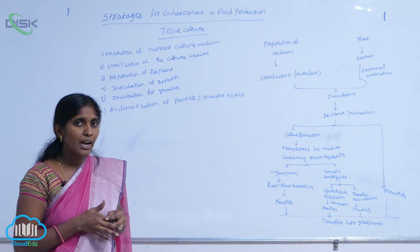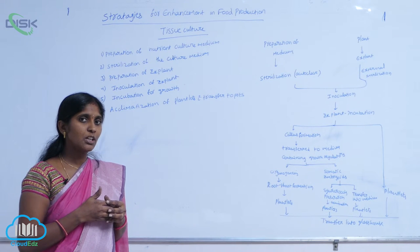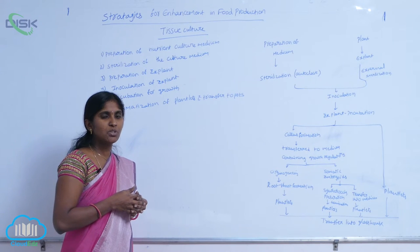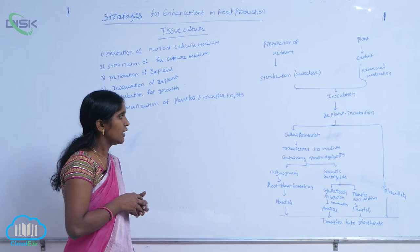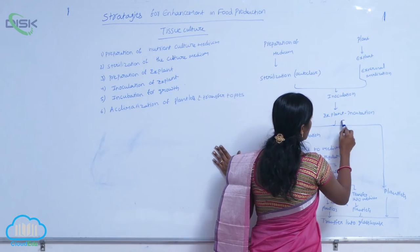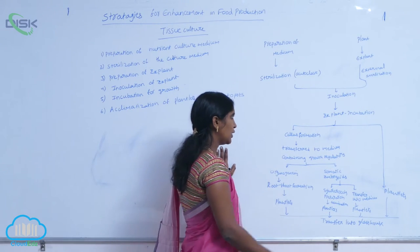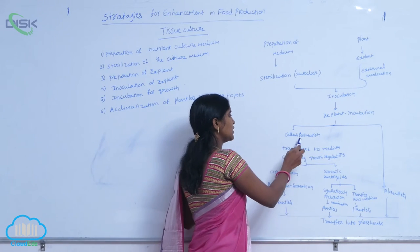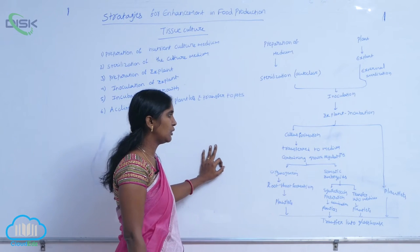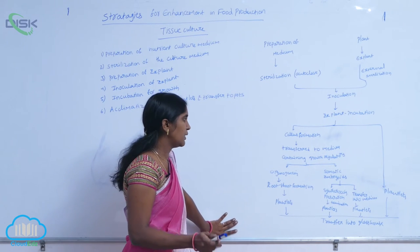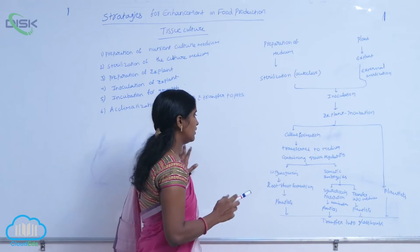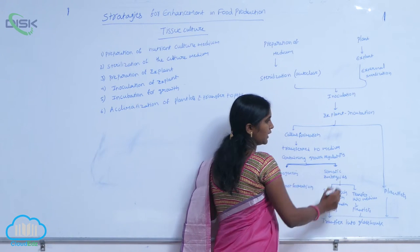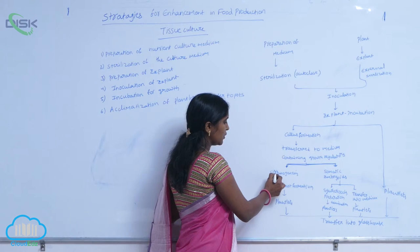From callus, by changing the nutrient medium to one containing plant growth regulators, organogenesis is carried out. After inoculation of explant, at the incubation period, callus is produced. After callus production, the callus is transferred into another medium consisting of growth regulators. Here, two techniques are followed: one is organogenesis — organ formation.